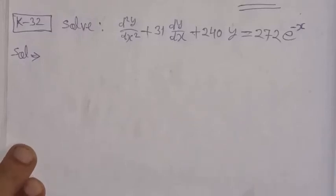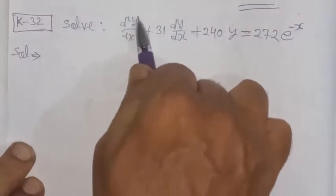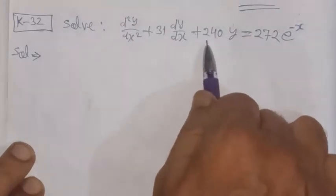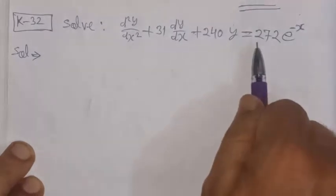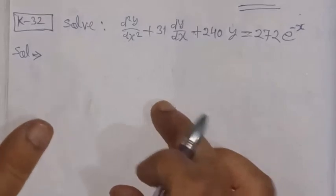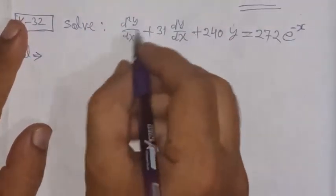Bismillahirrahmanirrahim. This problem is from the chapter 'Linear Differential Equation with Constant Coefficients'. Solve: d²y/dx² + 31·dy/dx + 240y = 272·e^(−x). Before solving this differential equation, we will rewrite it in operator notation.